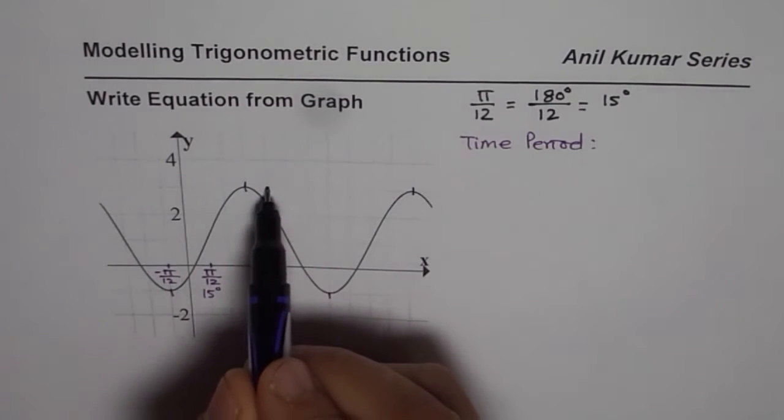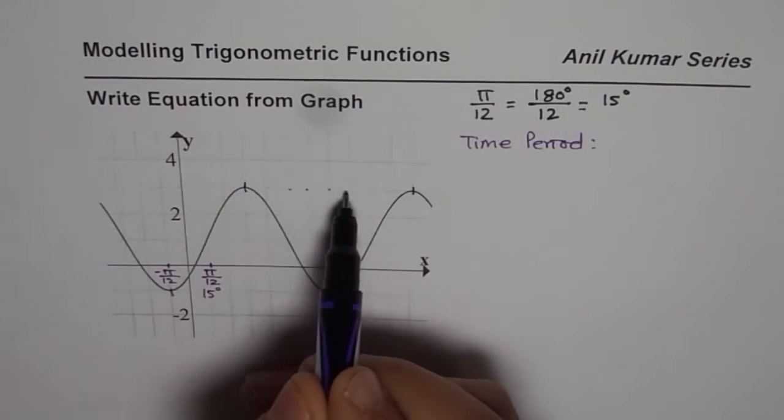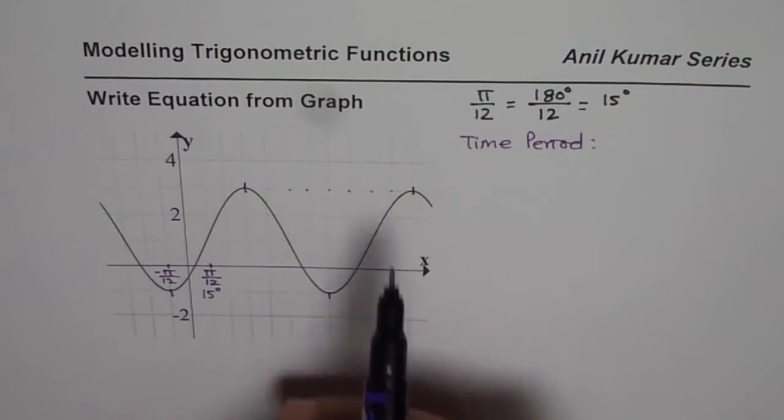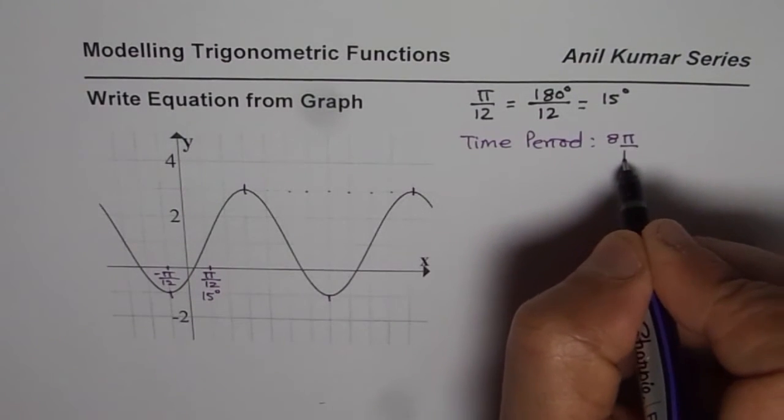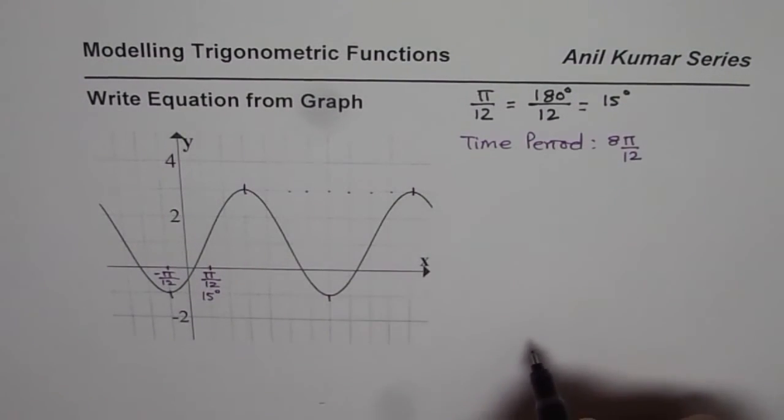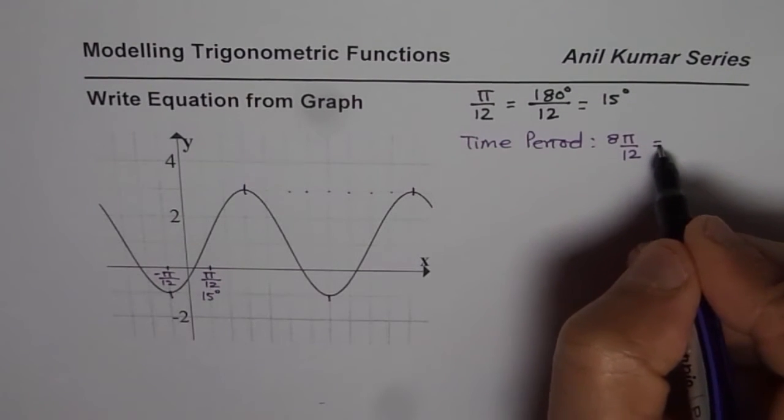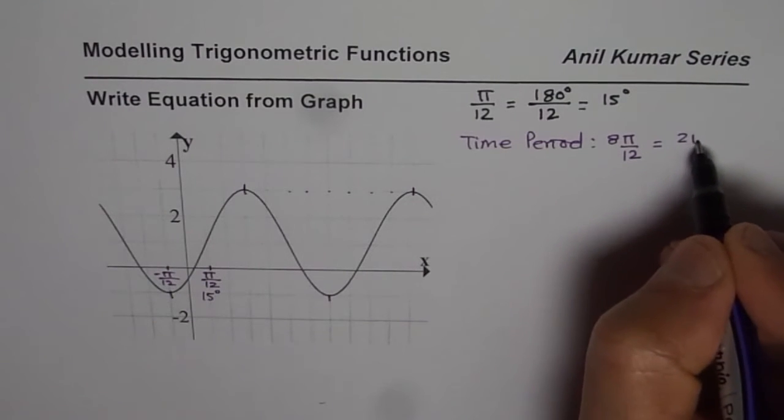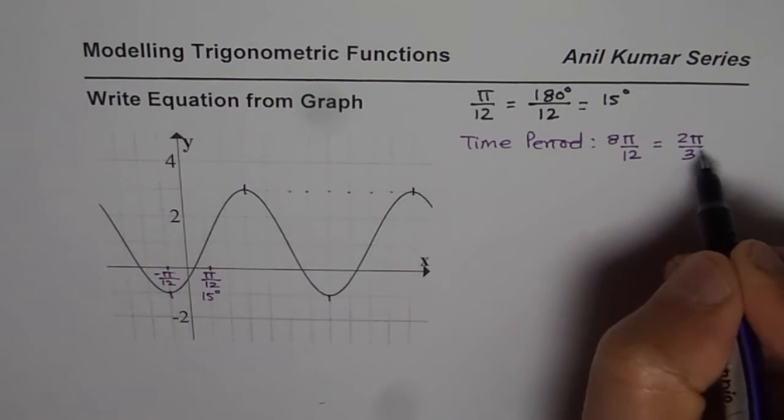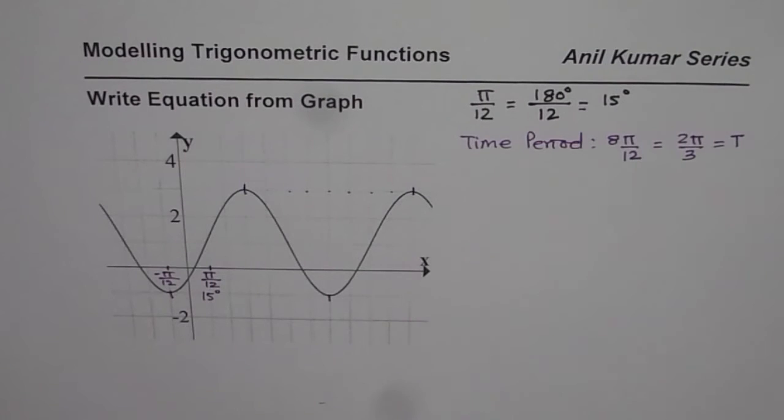So we can count the distance: 1, 2, 3, 4, 5, 6, 7, 8. So that means 8 times π/12. So that becomes the time period T for us. This can be simplified. We can divide both by 4 to get 2π/3 as time period.